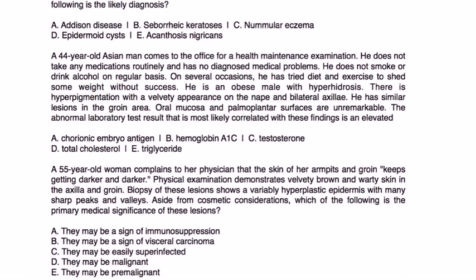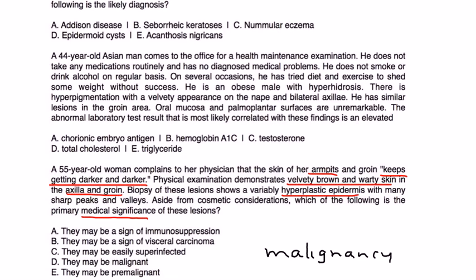Next question: A 55-year-old woman complains that the skin of her armpits and groin keeps getting darker. Physical exam demonstrates velvety, brown, and warty skin in the axilla and groin. Biopsy shows a variably hyperplastic epidermis with many sharp peaks and valleys. Aside from cosmetic considerations, the primary medical significance of these lesions — other than obesity, hyperinsulinemia, or insulin resistance — is that they may be a sign of a visceral carcinoma.